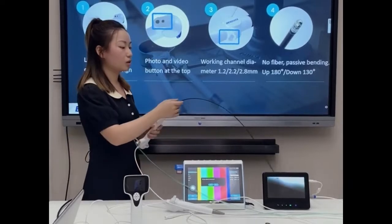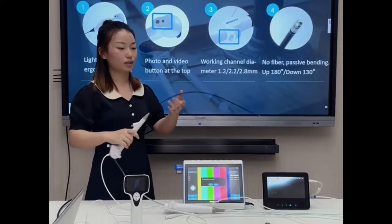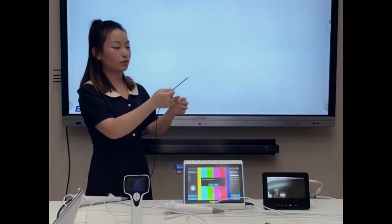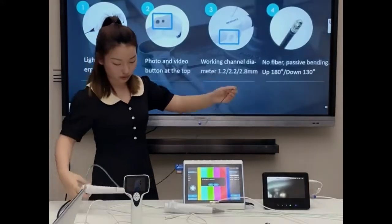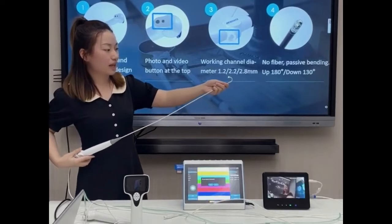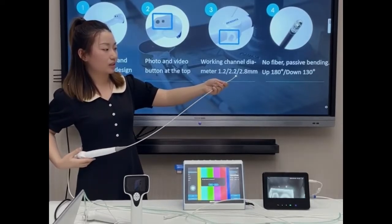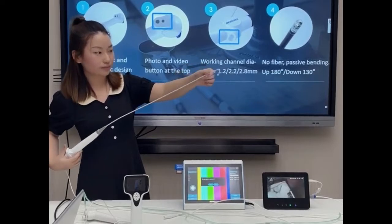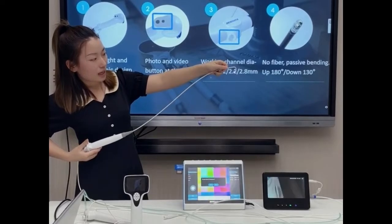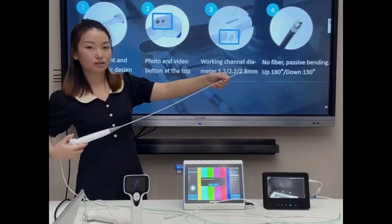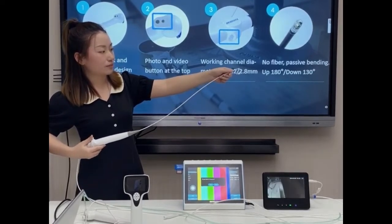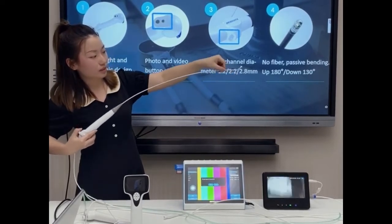And let's talk about the tube parts. The tip can be bending up to 180 degrees, then down to 130 degrees. High bending angles can let doctors easily navigate during operation. You can see the angle.